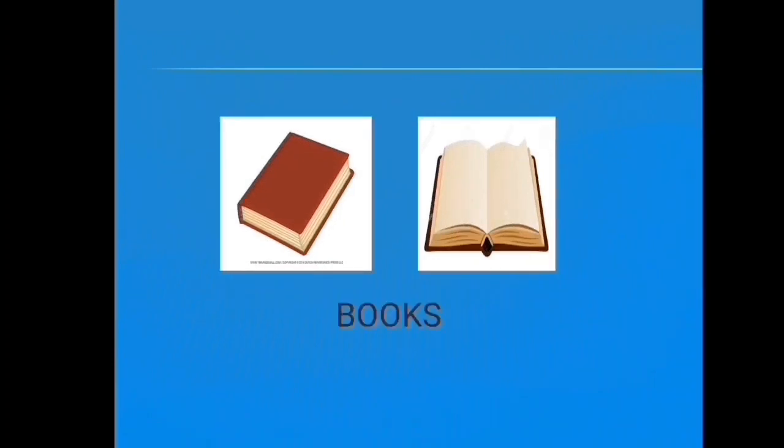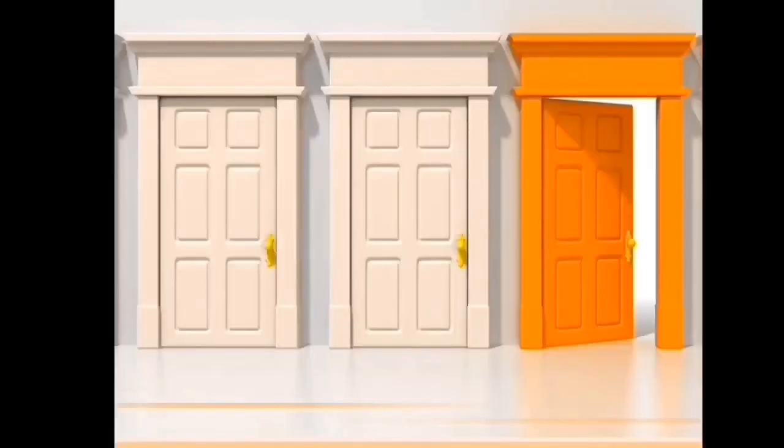Now look at this and identify objects. What are these children? These are books. When you look at this, first book is closed and the second book is opened. Now let us have a look at these doors. First two doors are closed and the third orange door is opened.